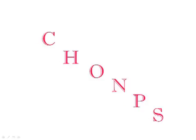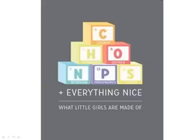Make sure that you know that P is phosphorus and not potassium. Everybody always wants to tell me it's potassium. That would be K. It's not CHOMKS. It's CHOMPS. So there you go. CHOMPS is what little girls are made of. And all living things are made out of CHOMPS. Make sure you're familiar with those atoms.